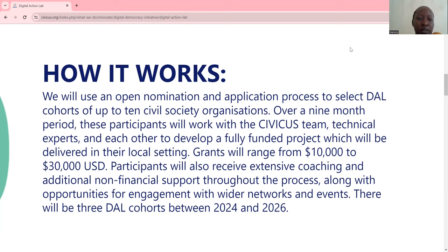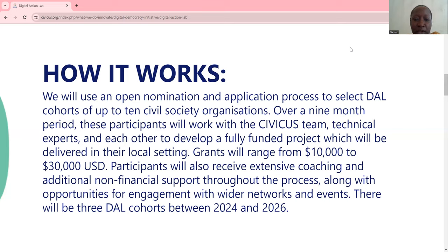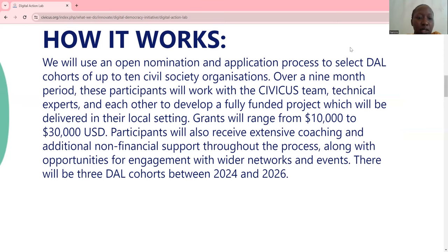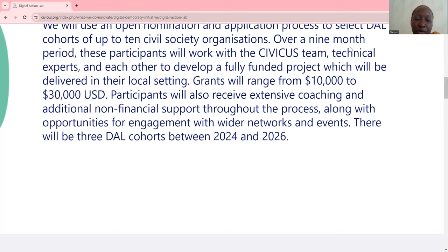So over a nine-month period, participants will work with the CVCAS team, technical experts and each other to develop a fully funded project which will be delivered in their local setting. Grants will range from $10,000 to $30,000 US dollars. Participants will also receive extensive coaching and additional non-financial support throughout the process, along with opportunities for engagement with wider networks and events. There will be three DAL cohorts between 2024 and 2026, so three cohorts of about 10 — that will be like 30 organizations in total.